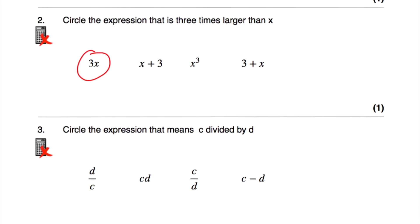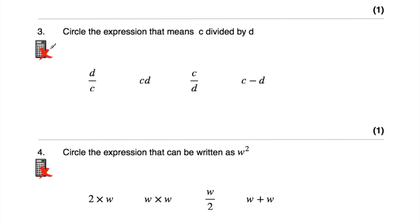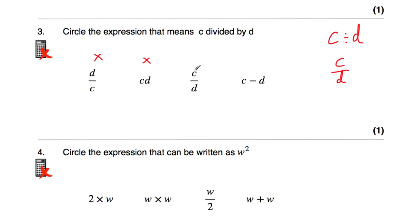Question number three says: circle the expression that means c divided by d. In algebra, we tend not to write the division symbol — instead we write c over d, meaning c divided by d. Here we've got d divided by c — that's not what we want. cd means c multiplied by d, so it's not that one. c divided by d is what we're looking for, so let's circle it. c subtract d is not c divided by d, so our answer is c over d.